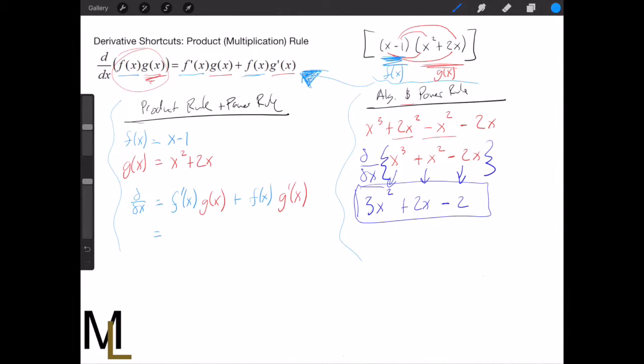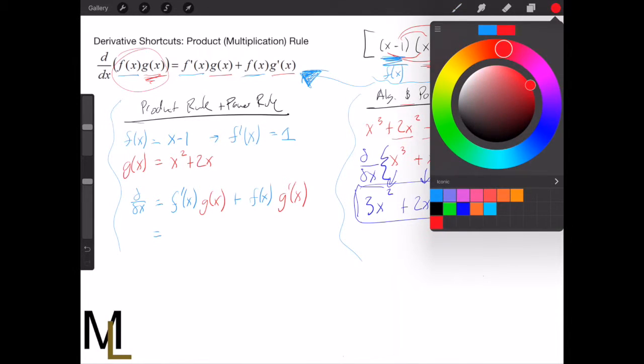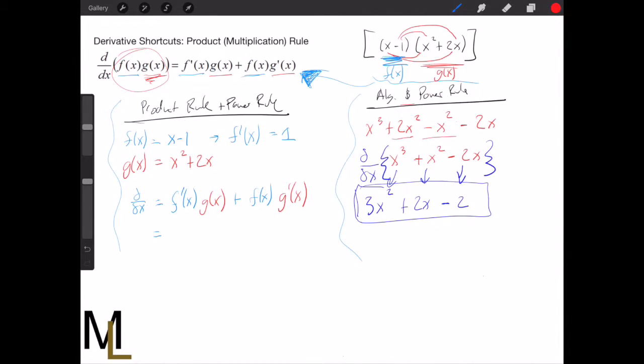f'(x) is just going to be 1. The reason is by the sum rule, the minus one goes away by the constant rule, and then the derivative of x is 1. The g'(x) part, we're going to use the power rule again, and we get x² becomes 2x, plus 2.